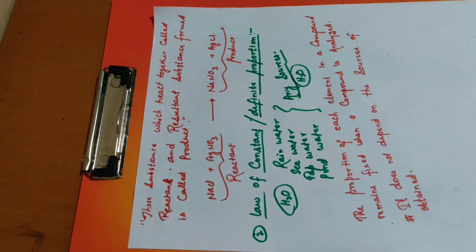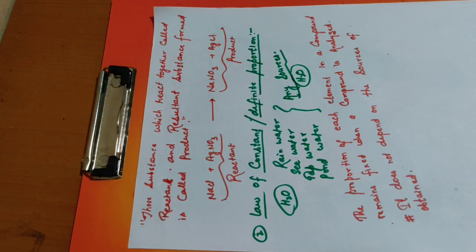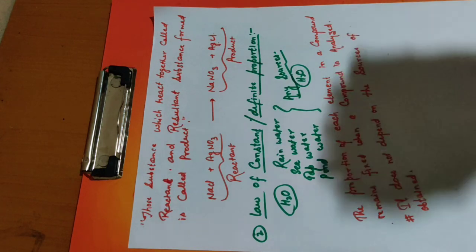Now our second law is the Law of Constant Proportion, also called the Law of Definite Proportion. This law states that in a compound, the proportion of elements remains fixed regardless of the source from which the compound is obtained. For example, water from any source - rain water, sea water, tap water, or pond water - will always have the molecule H2O. We will discuss the third law, the Law of Multiple Proportion, in our next video.